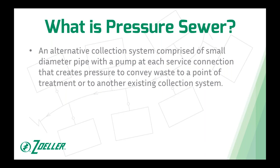So what is pressure sewer? It's also commonly referred to as low pressure sewer or LPS. It's an alternative collection system — gravity being the primary system used in wastewater. It's comprised of small diameter pipe with a pump at each service connection, whether that's an individual home, a commercial building, or sometimes a cluster of buildings. All those pumps together create pressure to convey waste to a point of treatment or to another existing collection system, such as a gravity sewer, a municipal lift station, or an existing pressure sewer.